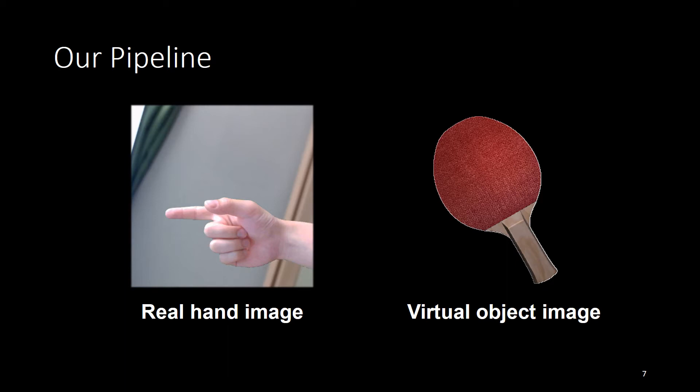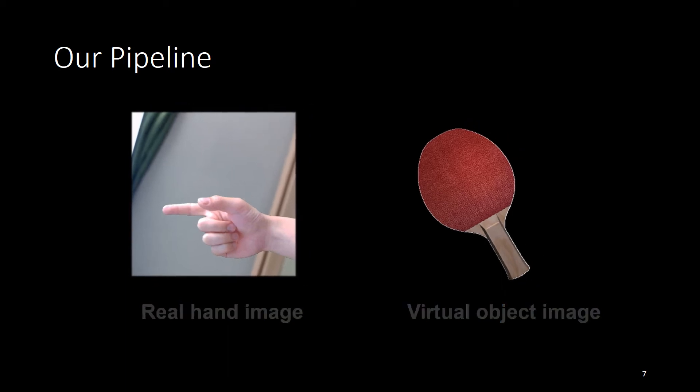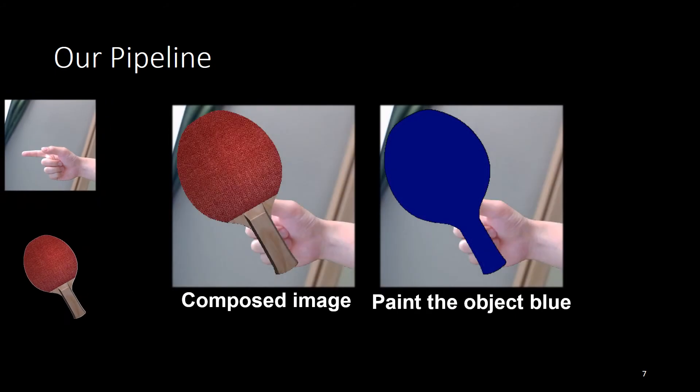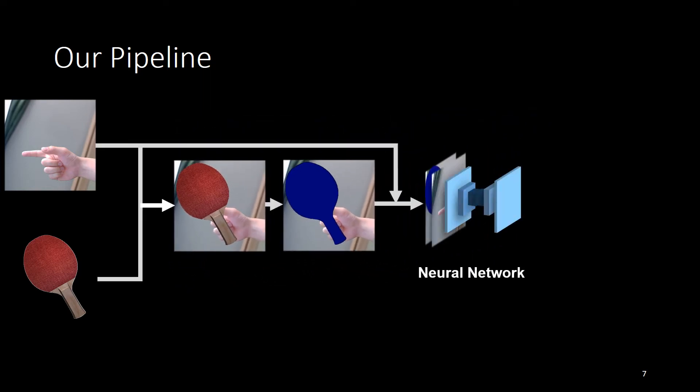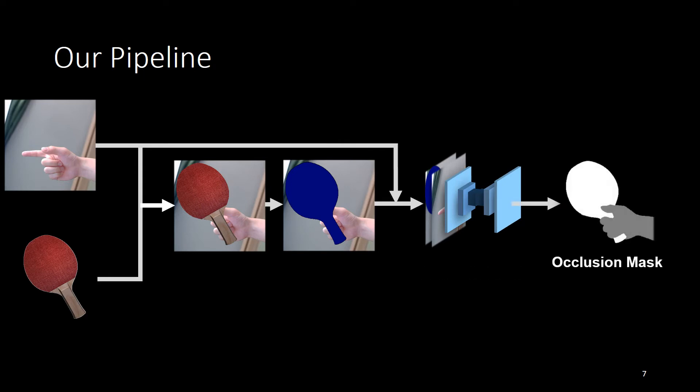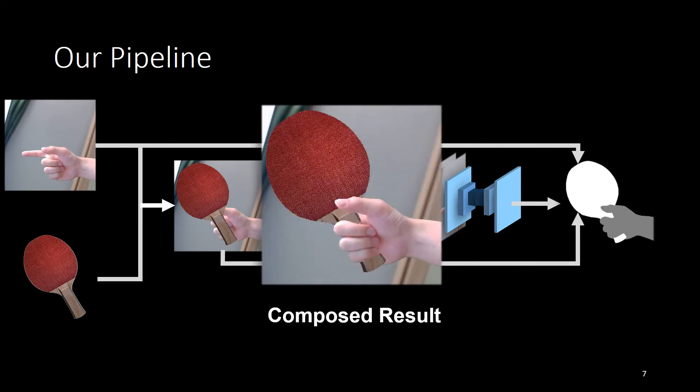This is our pipeline. The system input is a real hand image and a virtual object image. These two images are composed together, and then we paint the virtual object to blue. Then, the real hand image and the composed image are fed into our neural network. The network then generates the occlusion mask. With this mask, we can then compose our final result to show to the user.